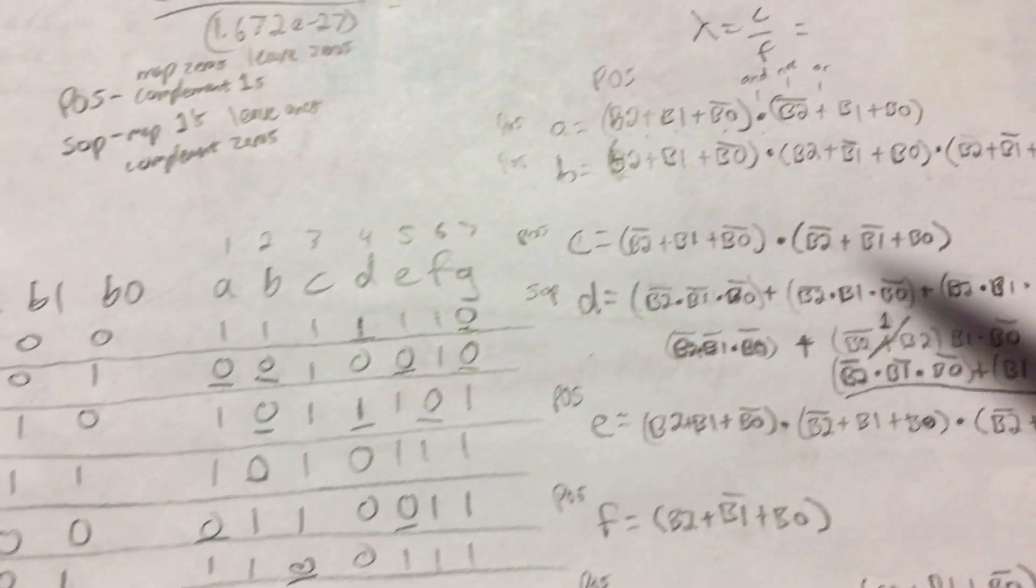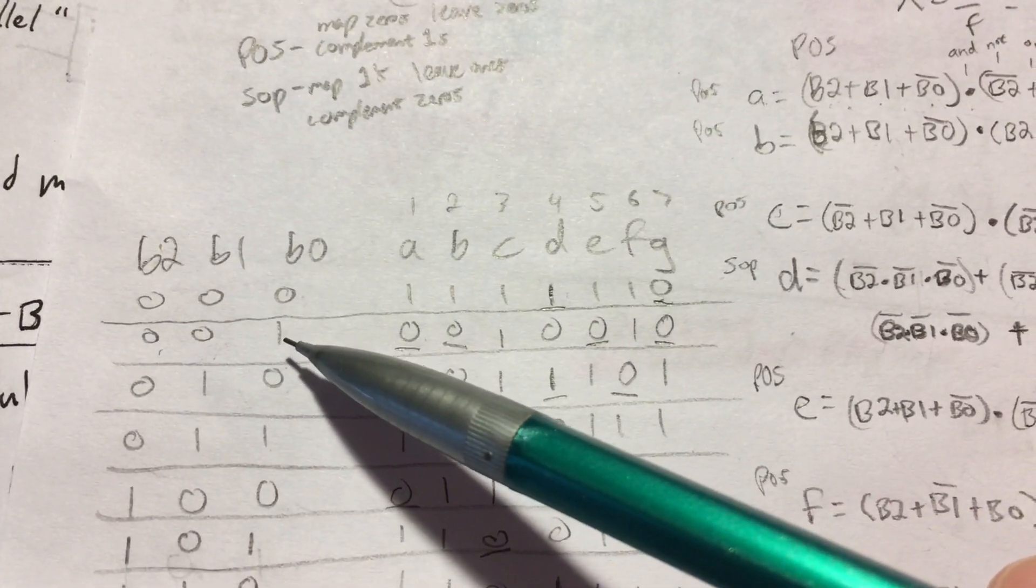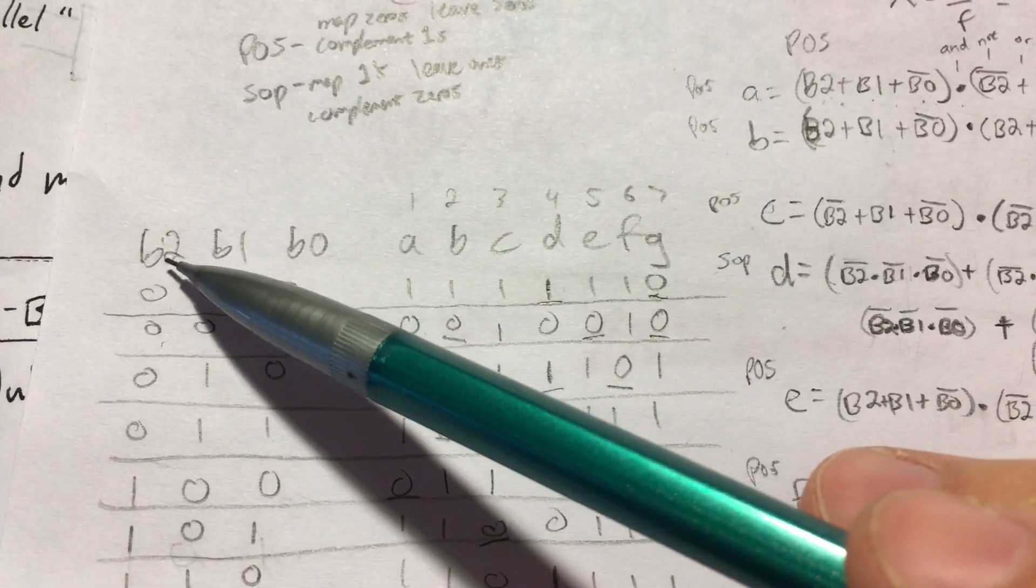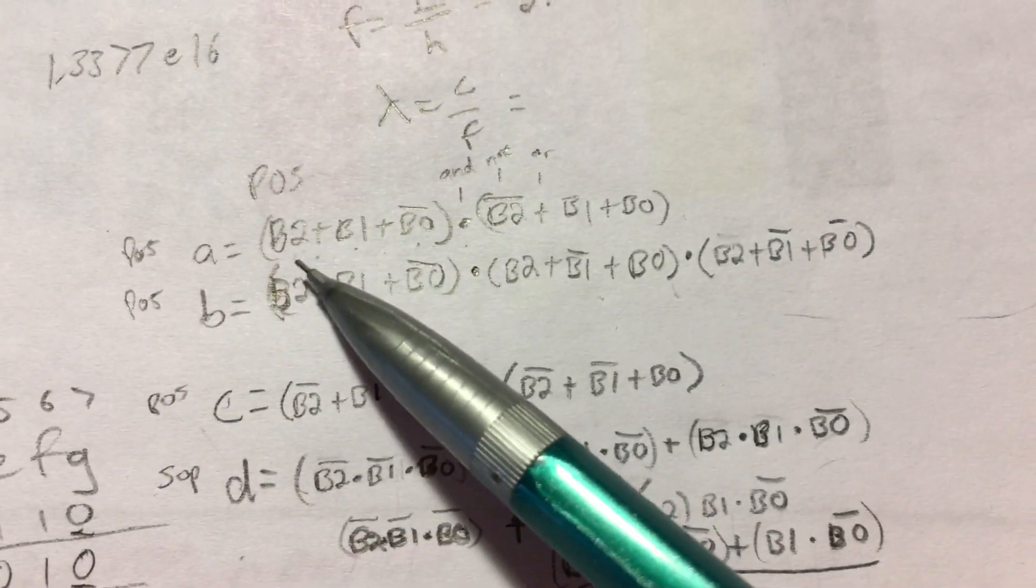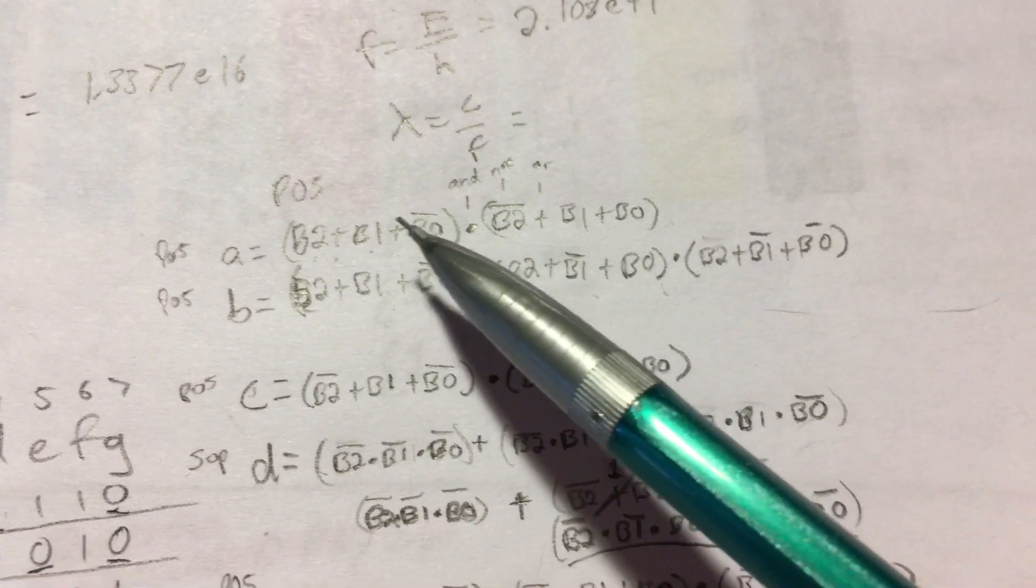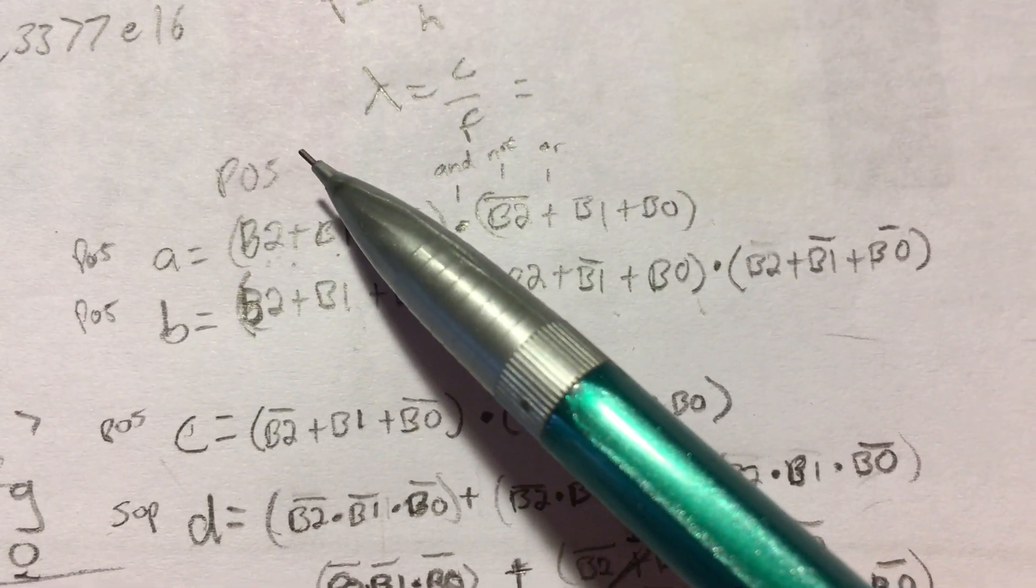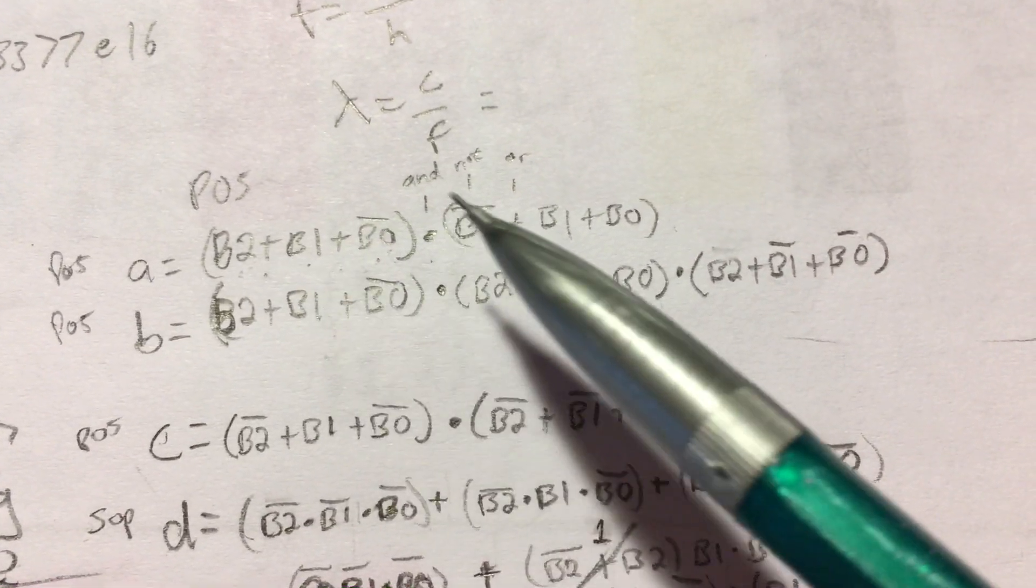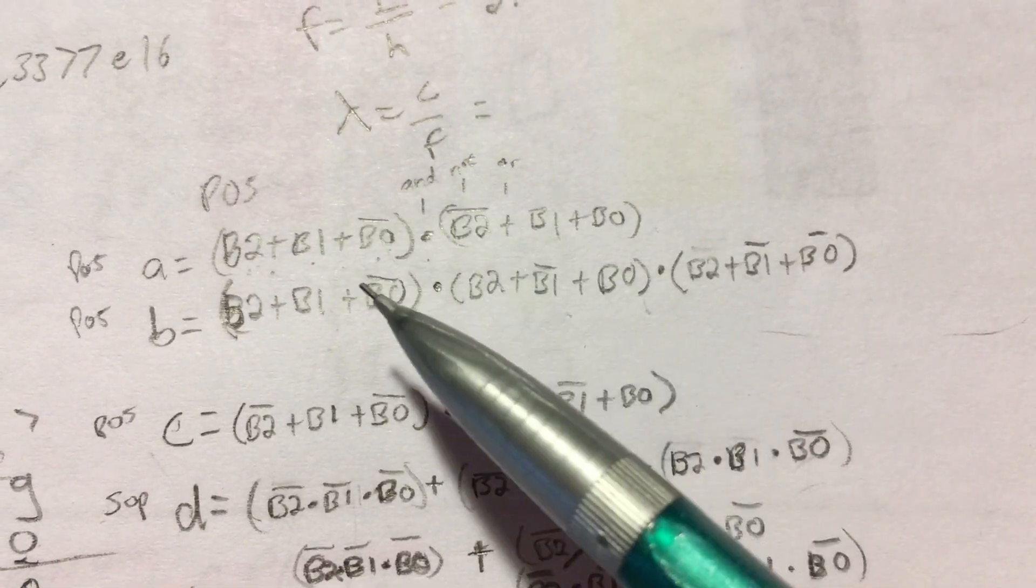So mapping this first zero, you see the values are 0, 0, 1. And we're going to invert that one. So B2, B1, invert B0. B2, B1, invert B0. So these pluses are the Boolean symbol for or. The multiplication is a symbol for and.